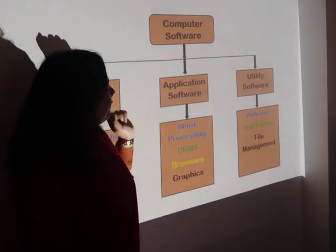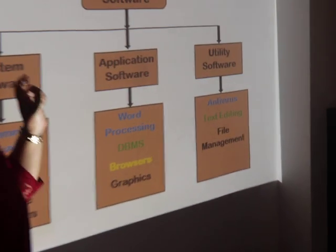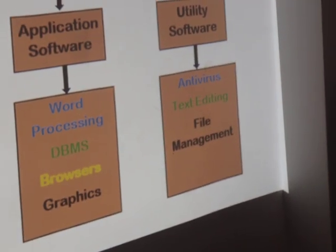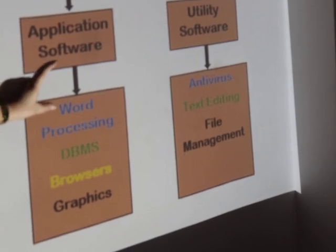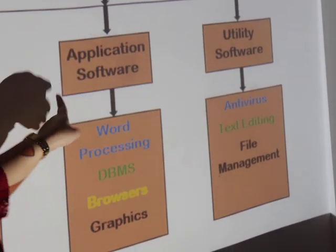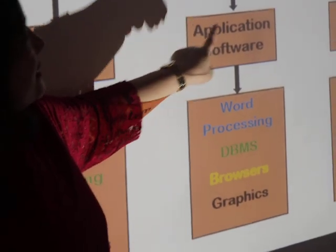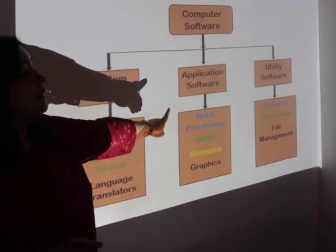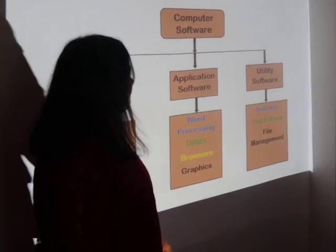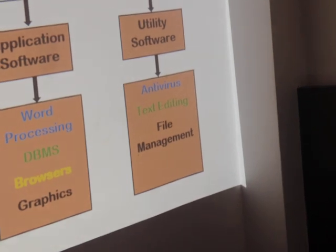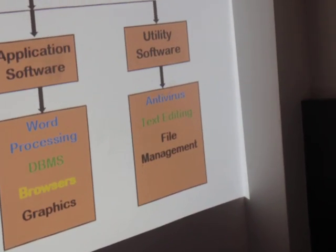Finally, the third type of software is utility software. It is used to enhance or maintain a computer. Utility software is designed to optimize, organize, analyze, or maintain the computer infrastructure. In contrast to application software, which is aimed at the end user, utility software maintains the computer itself. Various examples of utility software include anti-virus software, file management software, and text editing software. Another example is a defragmenter, which is used to optimize the hard disk.